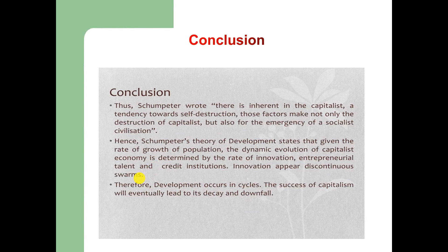In conclusion, Schumpeter was correct in saying there is an inherent tendency towards self-destruction in capitalism, making way for the emergence of socialist civilization. Schumpeter's theory states that given the rate of population growth, the dynamic evolution of a capitalist economy is determined by the rate of innovation, entrepreneurial talent, and credit institutions. Innovations appear in discontinuous swarms; therefore, development occurs in cycles. The success of capitalism will eventually lead to its decay and downfall.